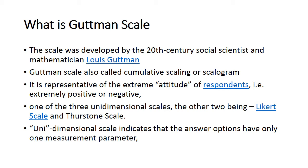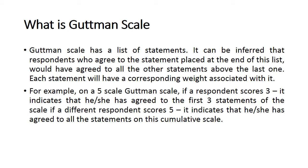Respondents indicate whether they have a positive or negative attitude by choosing between two responses — yes or no, or agree or disagree. It is one of the three unidimensional scales; the other two are the Likert scale and the Thurston scale. Unidimensional means the answer is just one dimension — they mark only yes or no.